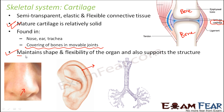The importance of cartilage is that it maintains the shape and flexibility of the organ and also supports the structure. Since it is not very soft, it can support the structure; but since it is elastic, it can give some flexibility so you can move that part to some extent. That is the important thing about cartilage.